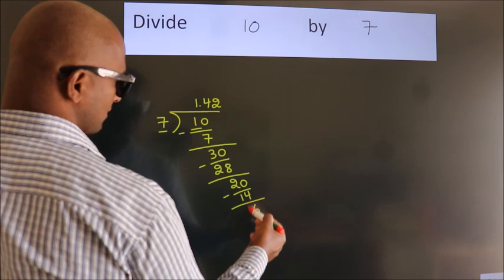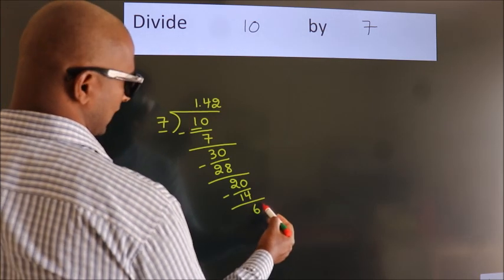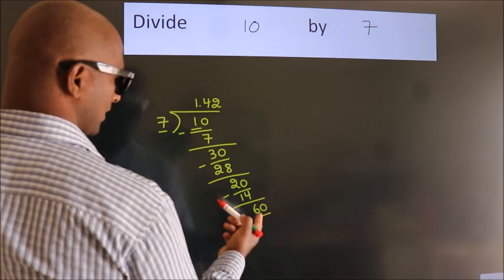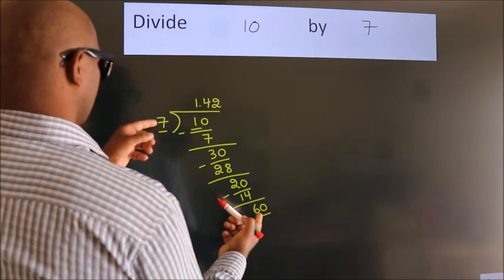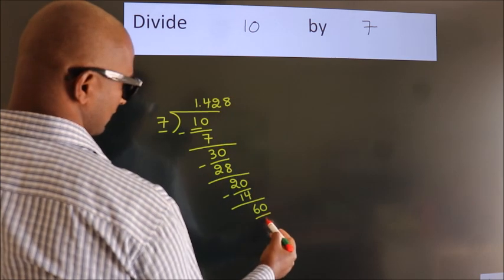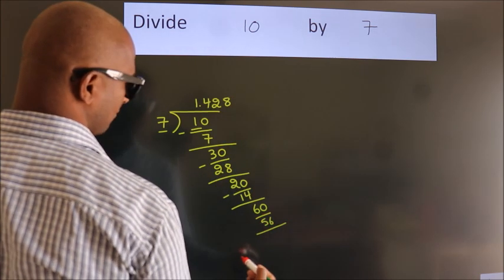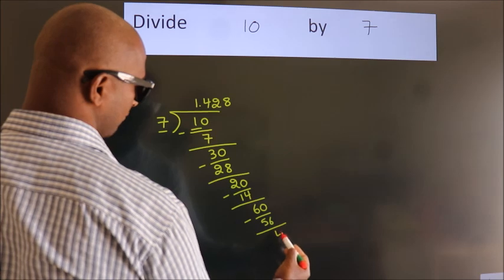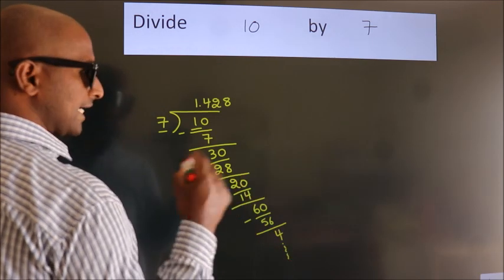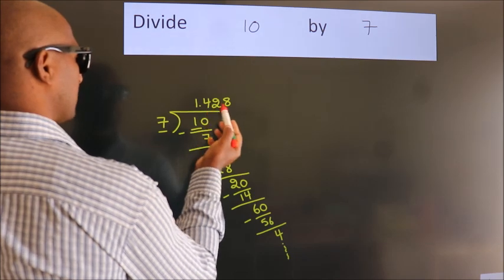After this, we already have the decimal, so directly take 0. So we have 60. A number close to 60 in the 7 table is 7 eights, which is 56. Now we subtract. We get 4. And the division continues. It is enough if we do up to 3 decimal places.